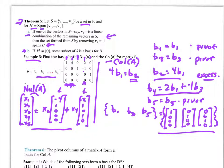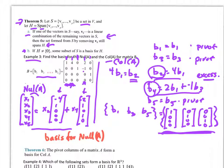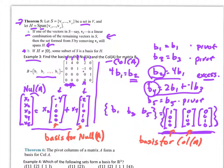In other words, I can generate any column in that space from these vectors. B2 and b4 are generated from b1, b3, and b5. So the basis for the null space of A is those two free-variable vectors, which by our definition from the last unit are linearly independent. And the basis for the column space of A is those three pivot column vectors.